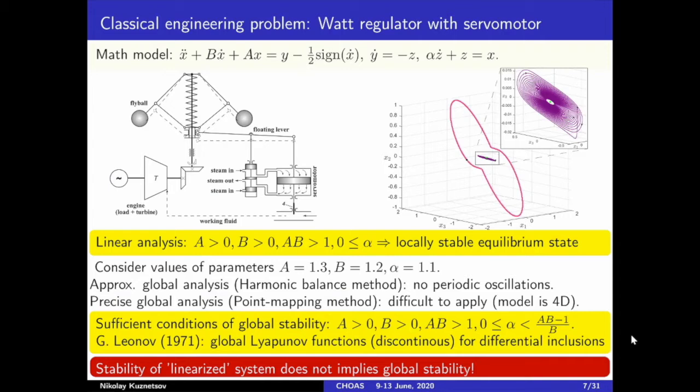Consider a modification of the classical Vyshnygradsky model for the flying ball regulator with servo motor. Vyshnygradsky and Stadola, by linear analysis, obtained conditions of local stability. Under these conditions, the harmonic balance method confirms global stability. However, by numerical analysis, one may reveal hidden oscillations in the model for certain parameters. Rigorous Andronov's analysis of global stability and oscillations occupied more than 40 pages even for a three-dimensional case, and can hardly be repeated for the considered four-dimensional model.